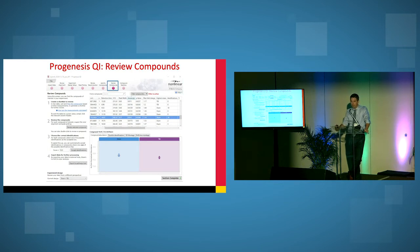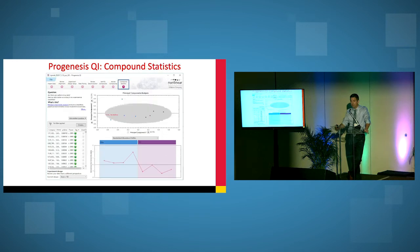Another view with Progenesis, you can review the compounds. There's a variety of parameters on this screen as well. And there's also some compound statistics as well here showing the PCA plot here showing that the sham versus our TBI are well separated.